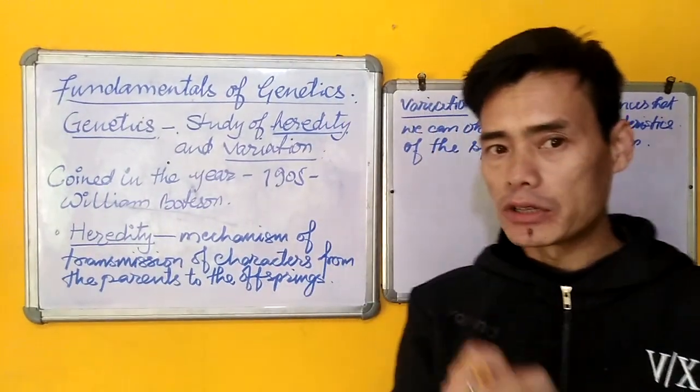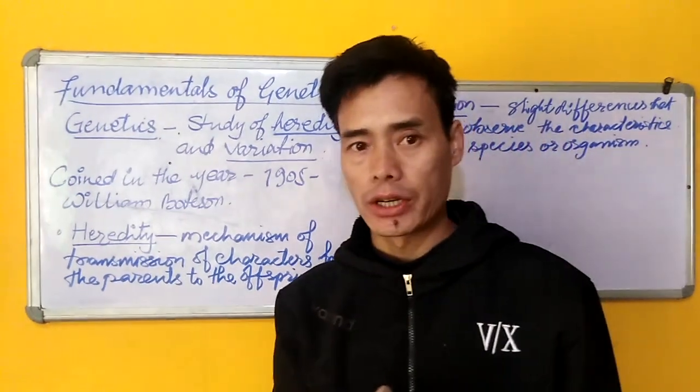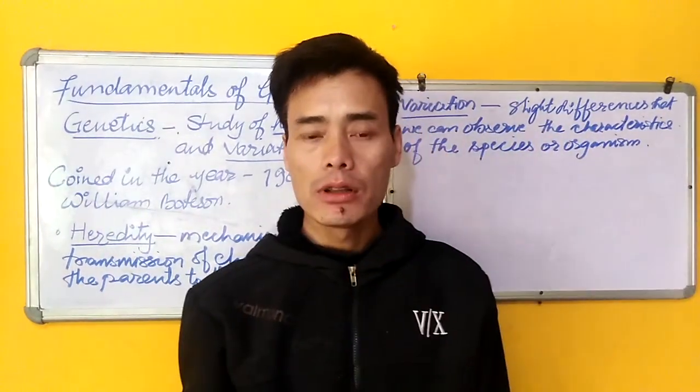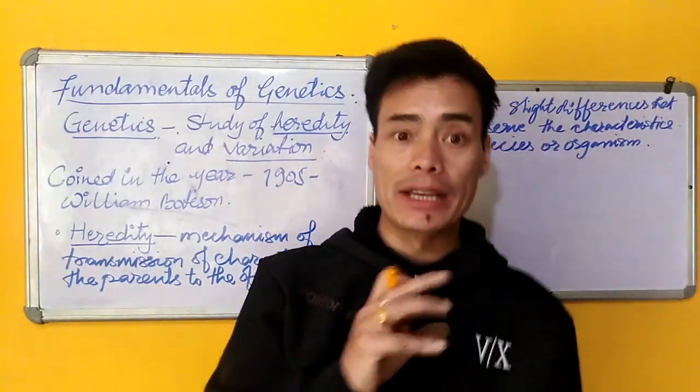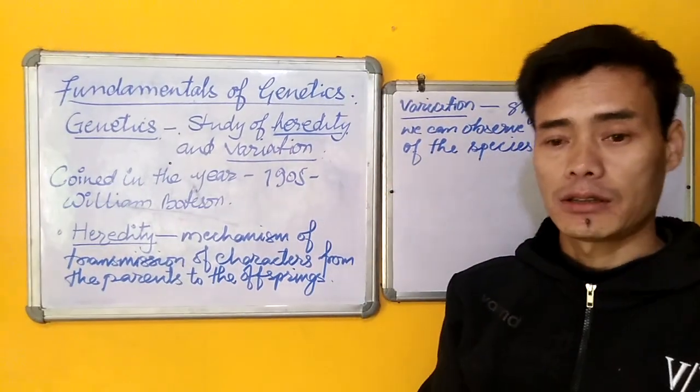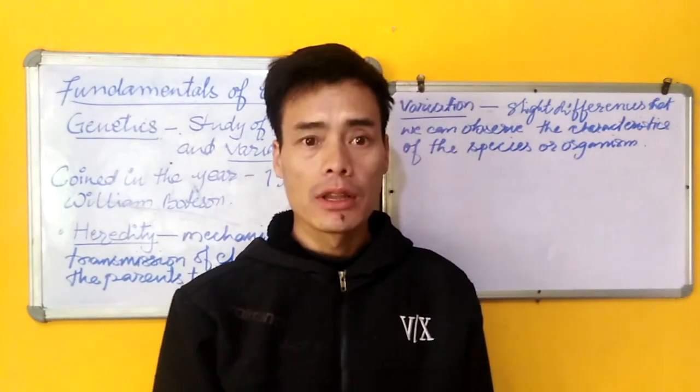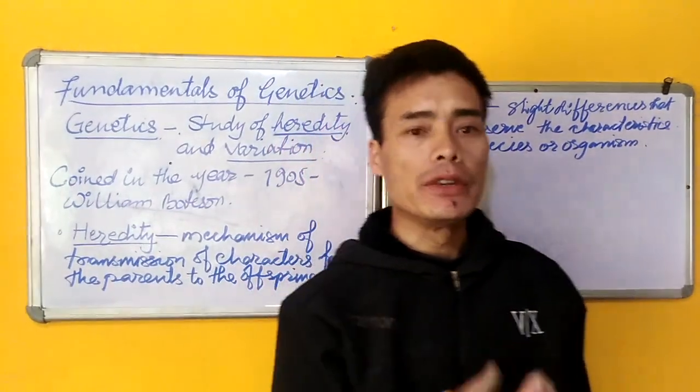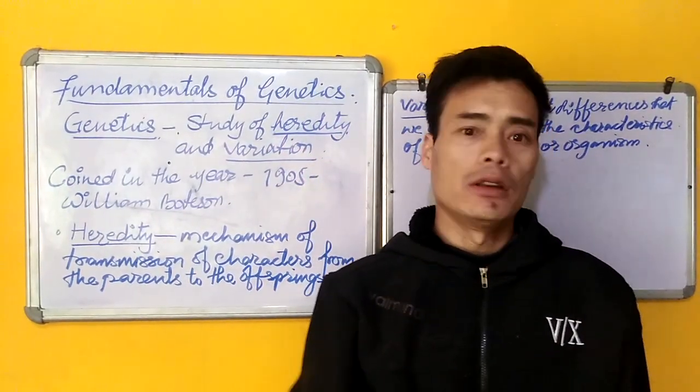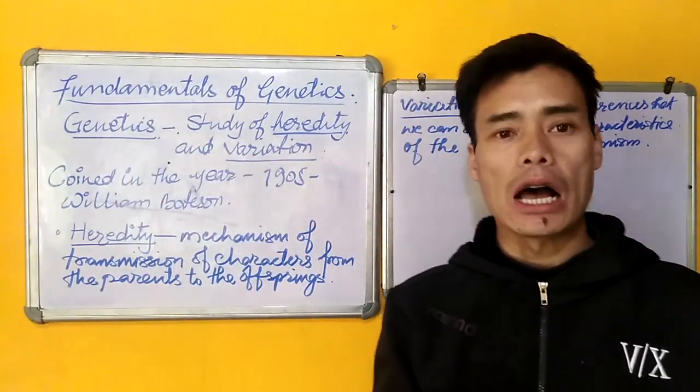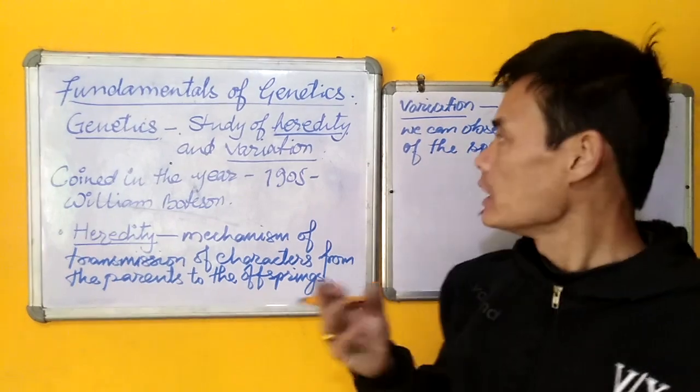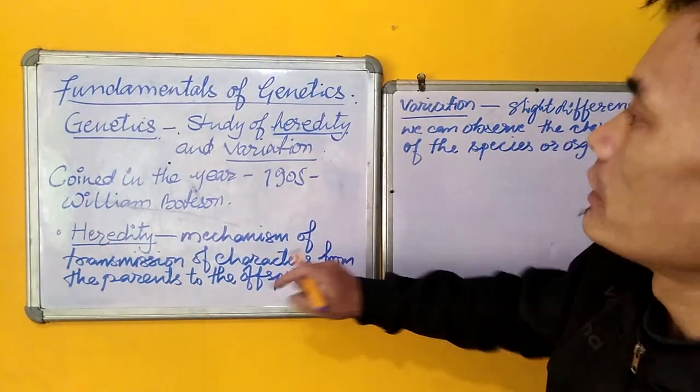Likewise, I would like to give you another example of the variation. Another example would be height. Let us take the character height. But the height that we observe may differ from individual to individual. Some individuals are tall, some individuals are short in height. So here we understand genetics, heredity and variations.